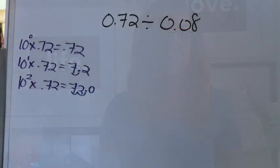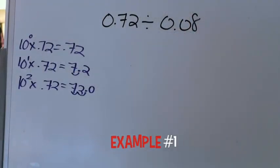I'm going to give you guys a couple of examples, go over those things with you, and then I'll be right back with my closing statements after that. So here we have an example where we're going to divide 72 hundredths and we're going to divide that by 8 hundredths.